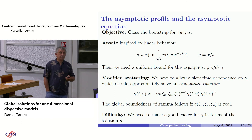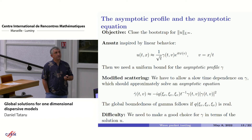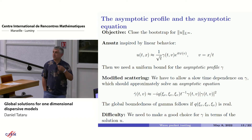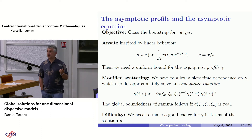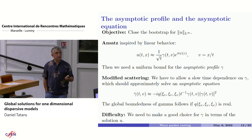The key question is how do you choose this asymptotic profile gamma given a solution u. A priori you start with the solution and don't know what gamma is — you want to make a good choice for gamma and show that your good choice solves the asymptotic equations.